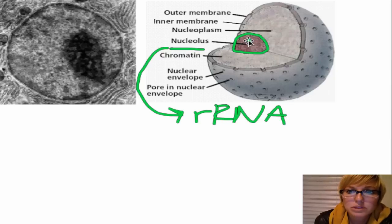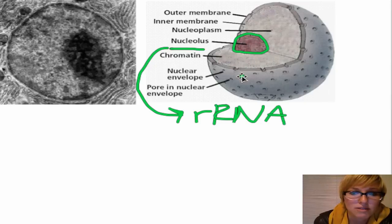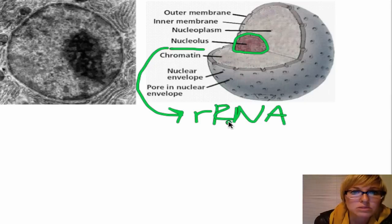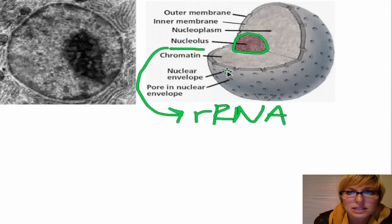This is a really, really important part of cells because we know that ribosomes also serve another very important function. The ribosomes are secreted through these little pores in the nuclear envelope, which is just a membrane that surrounds the nucleus.